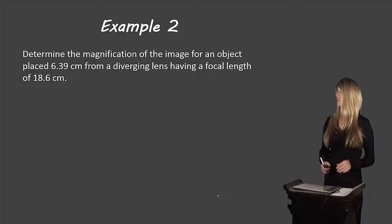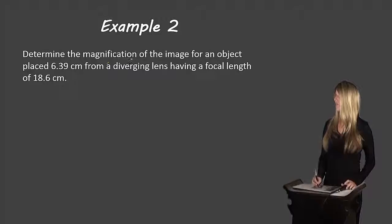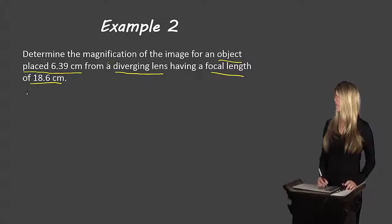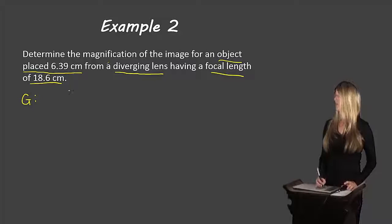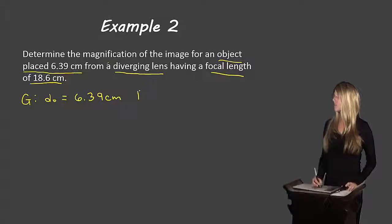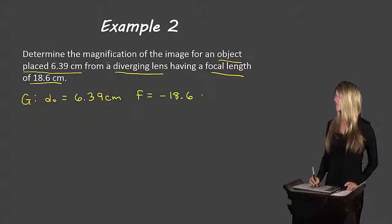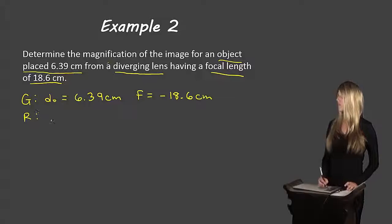Determine the magnification of the image for an object placed 6.39 centimeters from a diverging lens that has a focal length of 18.6 centimeters. Our givens: the object distance DO is 6.39 cm — positive because DO is always positive. The focal length is negative 18.6 cm because it is a diverging lens. Required: we need to find the magnification.